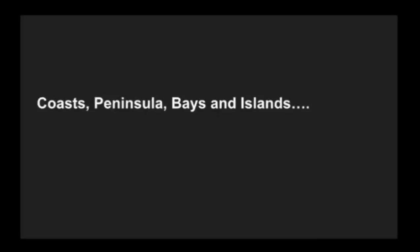In our last lecture we studied about plains, deserts, and plateaus, and we also saw some valleys and passes. Now it is time to study some other features of land — that is, coasts, peninsulas, bays, and islands. These are features we see around us when we travel to other places. We see water bodies, seashores, and islands. These are also land features, and in today's session we are going to study these four features of land.